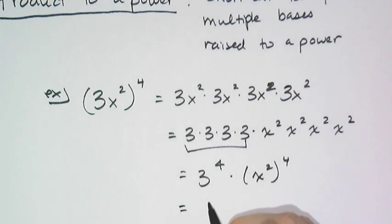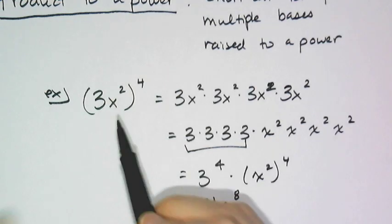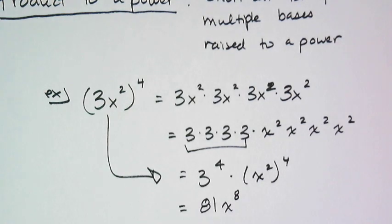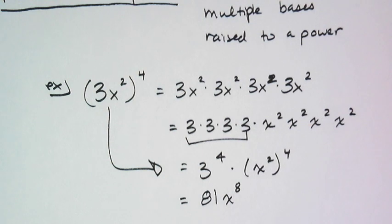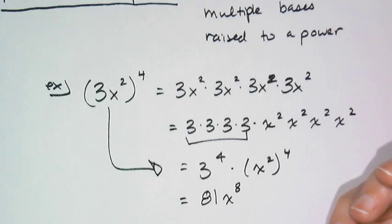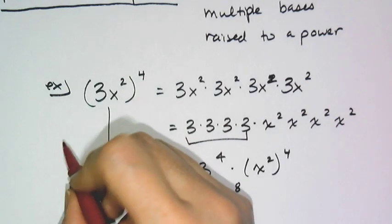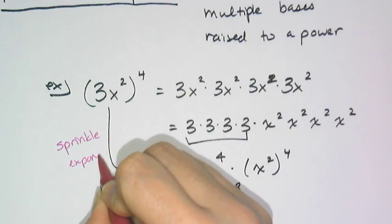Then I can simplify: 3 to the 4th is 81, and using the power rule I get x to the 8th. The shortcut is that if I have a product raised to a power, each of the bases gets that exponent. It's not really distribution — you kind of want to say distribution — but we can say 'sprinkle' the exponent, though that's not an official math word.